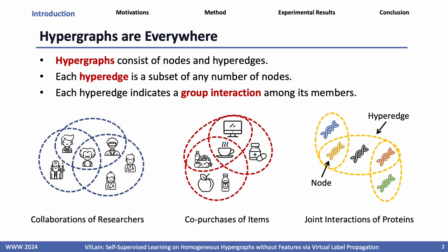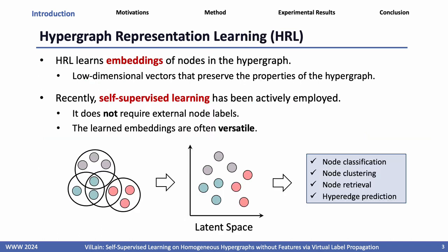Hypergraphs are everywhere. Hypergraphs consist of nodes and hyperedges, where each hyperedge is a subset of any number of nodes. Group-wise interactions, which are naturally represented by hyperedges, arise in various areas in our life, such as collaborations of researchers and co-purchases of items. A popular approach to analyze hypergraphs is hypergraph representation learning, or HRL.